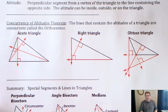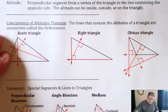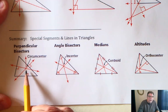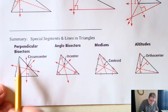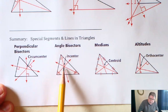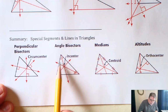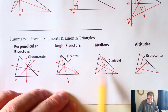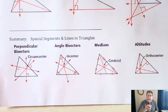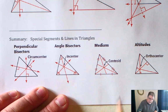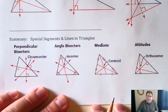The orthocenter doesn't really have any special properties per se — it's just the point of concurrency of the altitudes. So to summarize all four: perpendicular bisectors create the circumcenter, which draws a circle outside the triangle. Angle bisectors create the incenter, which is equidistant from the sides and inscribes a circle inside the triangle. The centroid is the point of concurrency of the medians, and it is the balancing point of the triangle — the shorter distance from the centroid is one-third, and the longer distance is two-thirds. The orthocenter is where the three altitudes intersect.